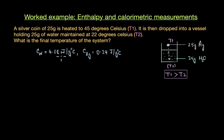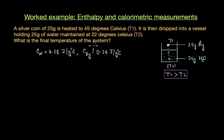Let's look at one more question. A silver coin of 25 grams is heated to 45°C — let's call it T1. It is then dropped into a vessel holding 25 grams of water maintained at 22°C — let's call this T2. We need to figure out what is the final temperature of the system once thermal equilibrium is attained. We have information on the specific heat capacity of both water and silver.